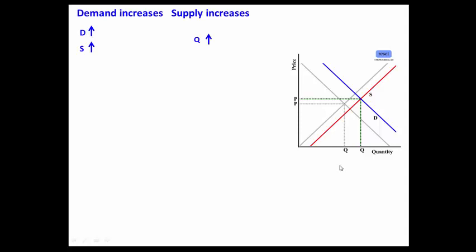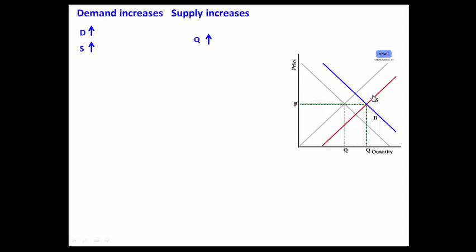Notice that the price in this situation has gone up. But if supply kept on increasing, it would remain the same or it would go down. So what we say in this situation is that price is indeterminate — you can't determine what happens to price.